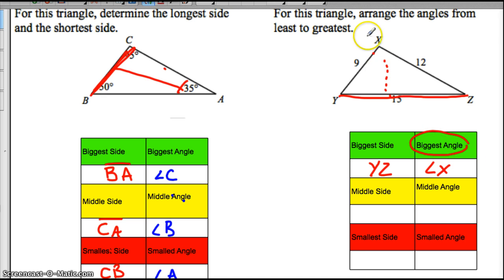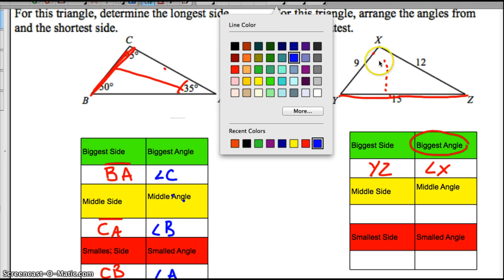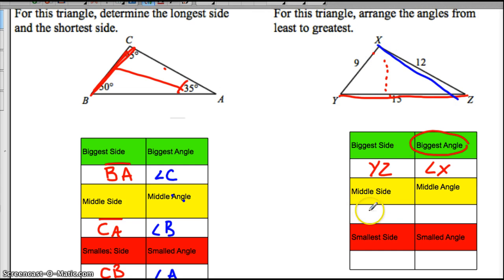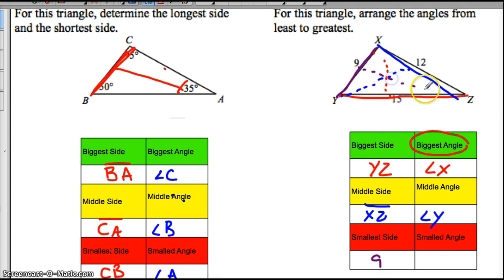Our next one is XZ — that's our second biggest, our middle side. So XZ is our middle side, and the angle across from it is angle Y, making angle Y the middle angle. And finally, we know that XY is our smallest side. So across from that, angle Z is going to be our smallest angle. So angle X is our biggest angle and angle Z is our smallest, because these are what are across.